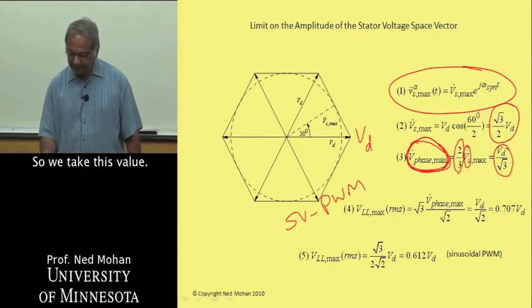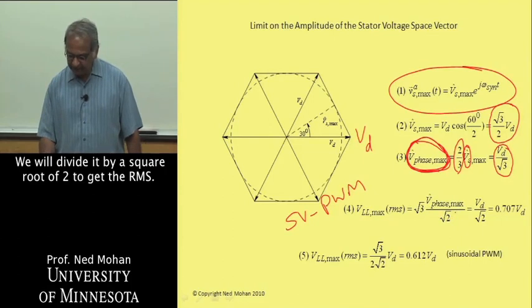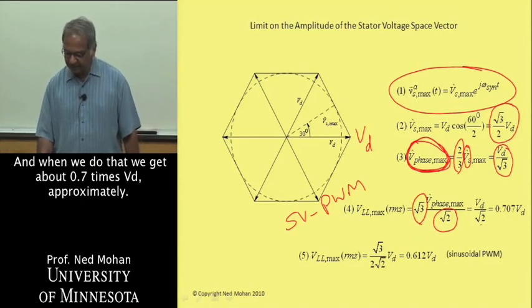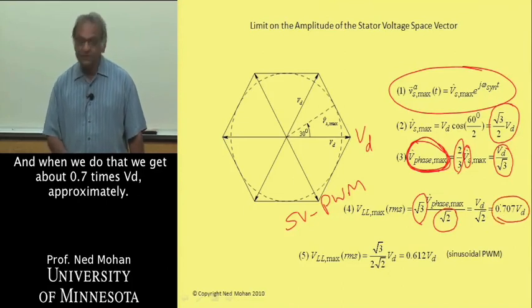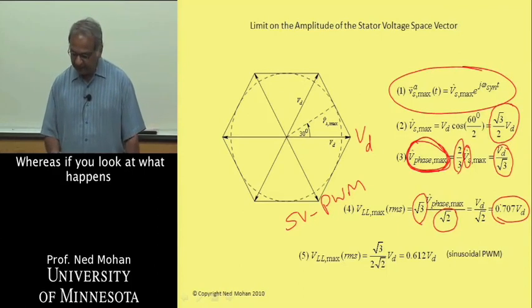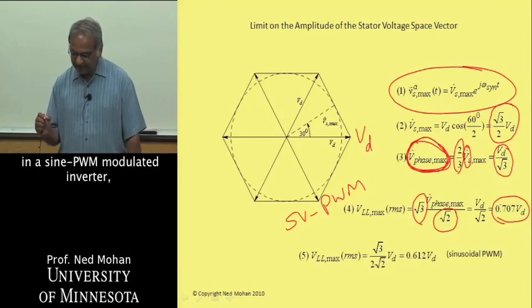That's the maximum value of the peak of a phase voltage. From there we can calculate the maximum RMS voltage that we can get in this SVPWM. We will take this value, divide it by √2 to get the RMS, multiply it by √3 to get the line-to-line voltage, and when we do that we get about 0.7 times VD approximately.